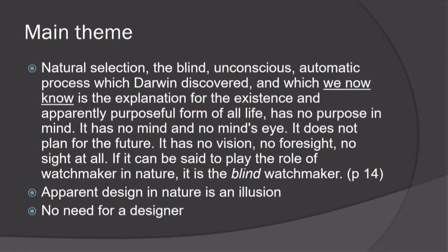This is the main theme of the book. Natural selection — the blind, unconscious, automatic process which Darwin discovered, and which we now know is the explanation for the existence and apparently purposeful form of all life — has no purpose in mind. It has no mind and no mind's eye. It does not plan for the future. It has no vision, no foresight, no sight at all. If it can be said to play the role of a watchmaker in nature, it is the blind watchmaker. So he's arguing that the design we observe is only apparent — an illusion — and there is no need for a designer.